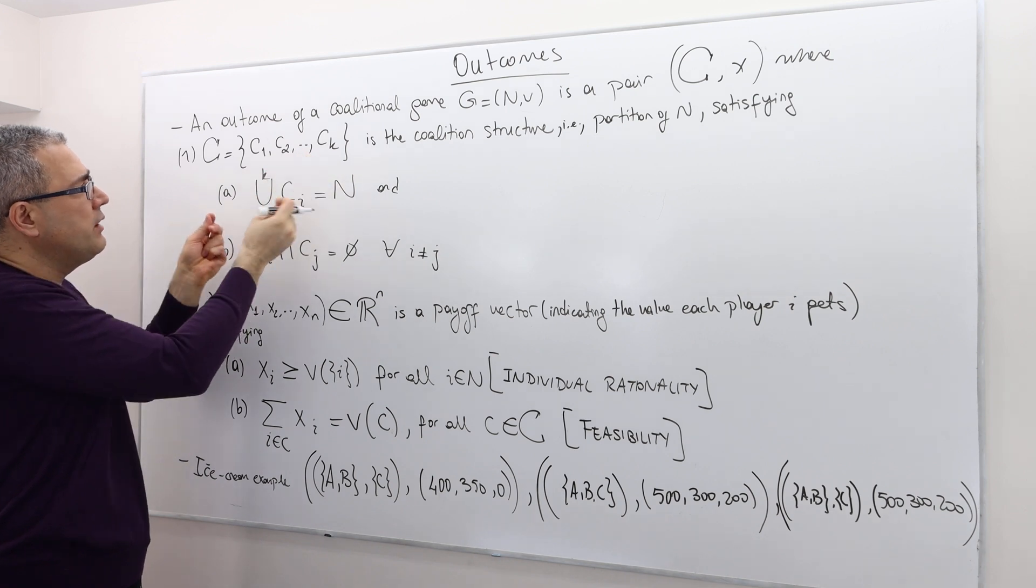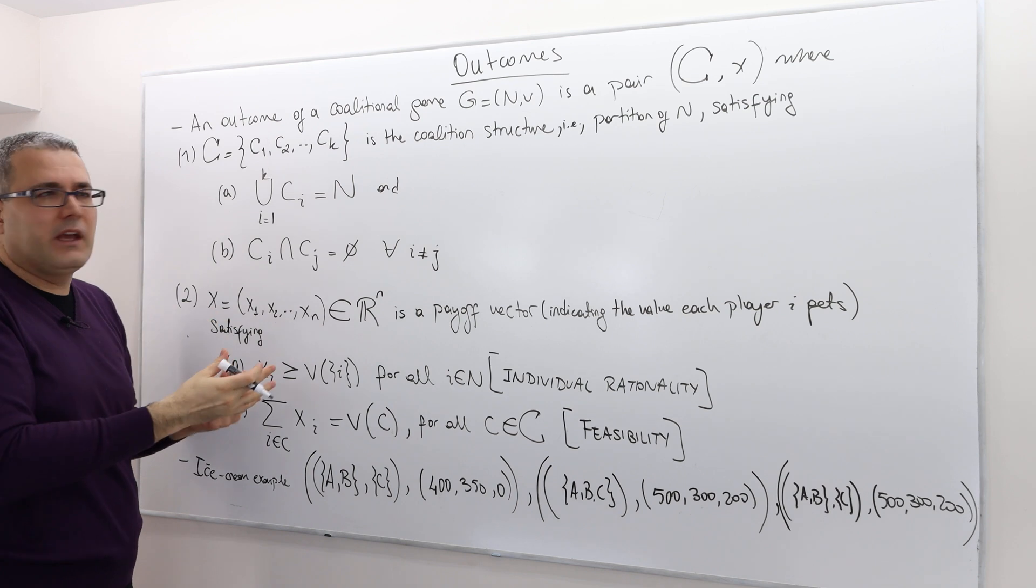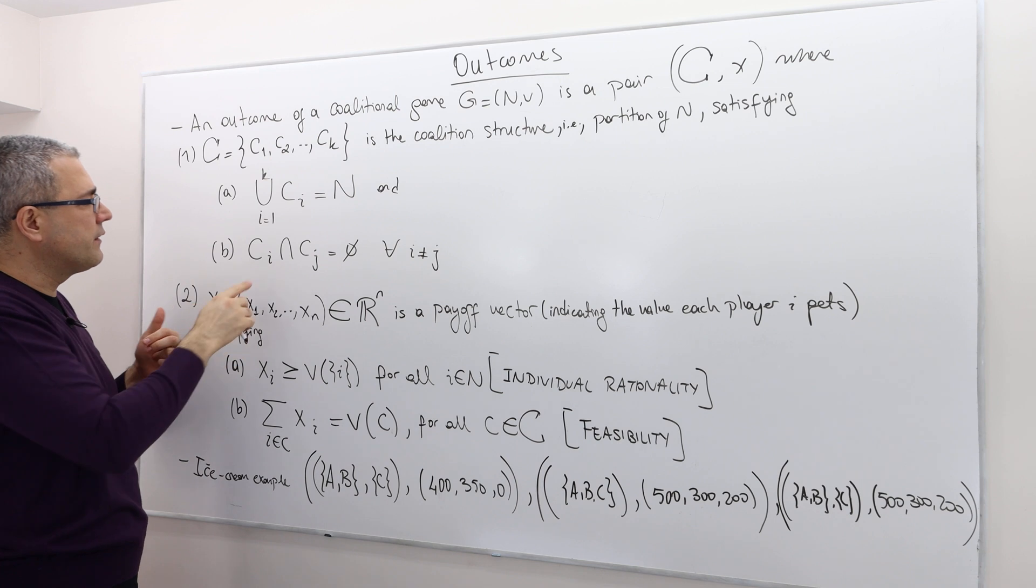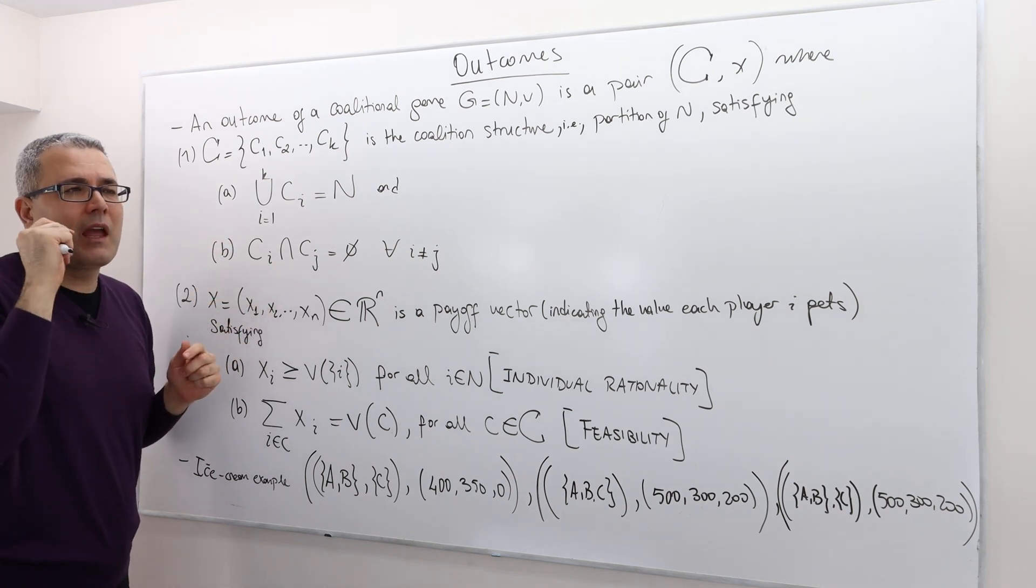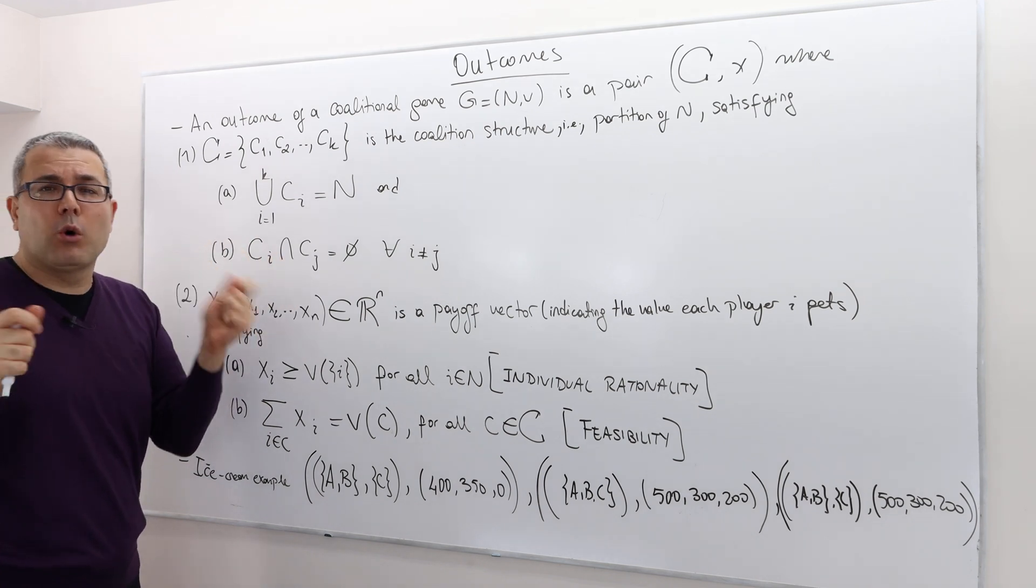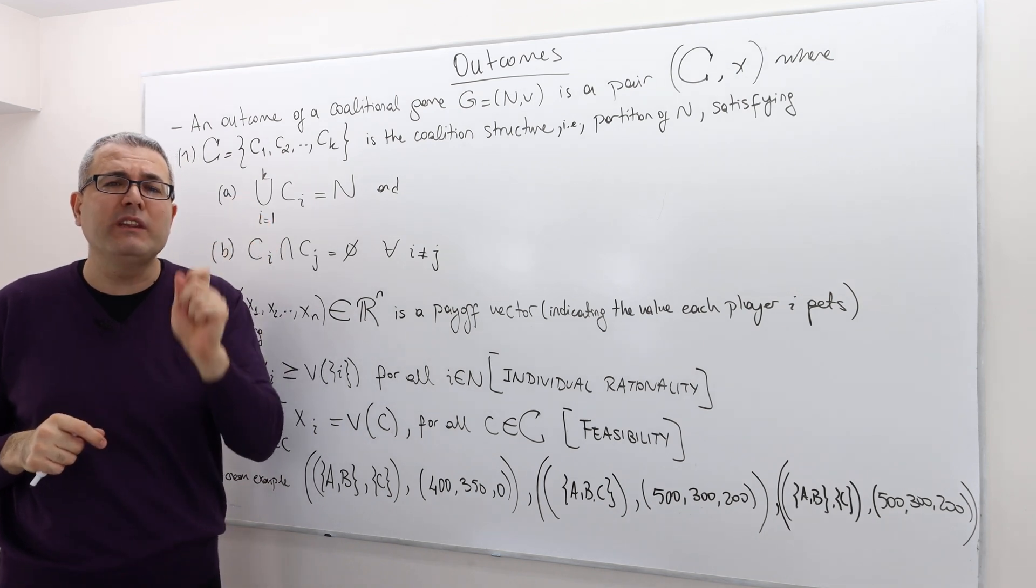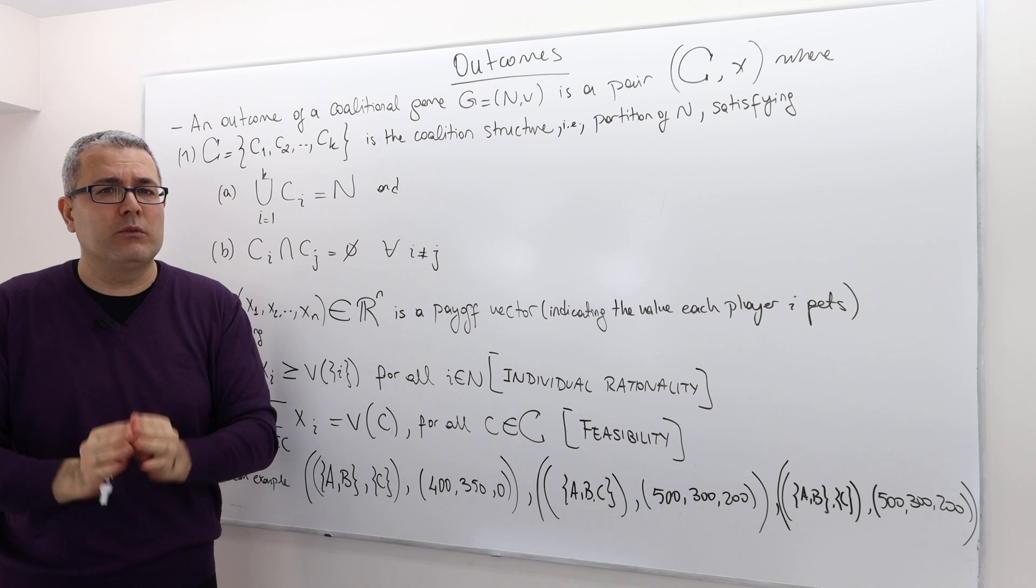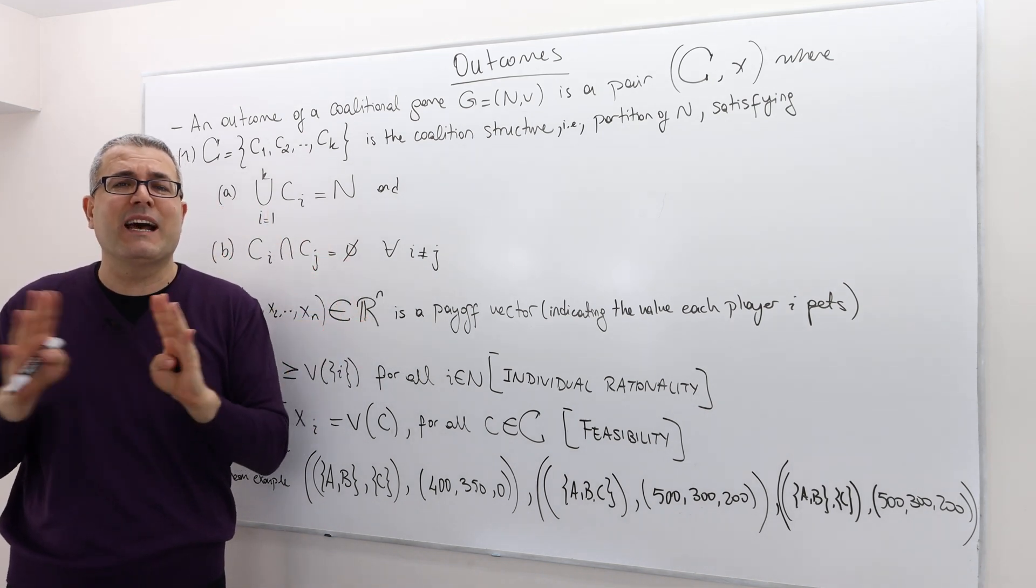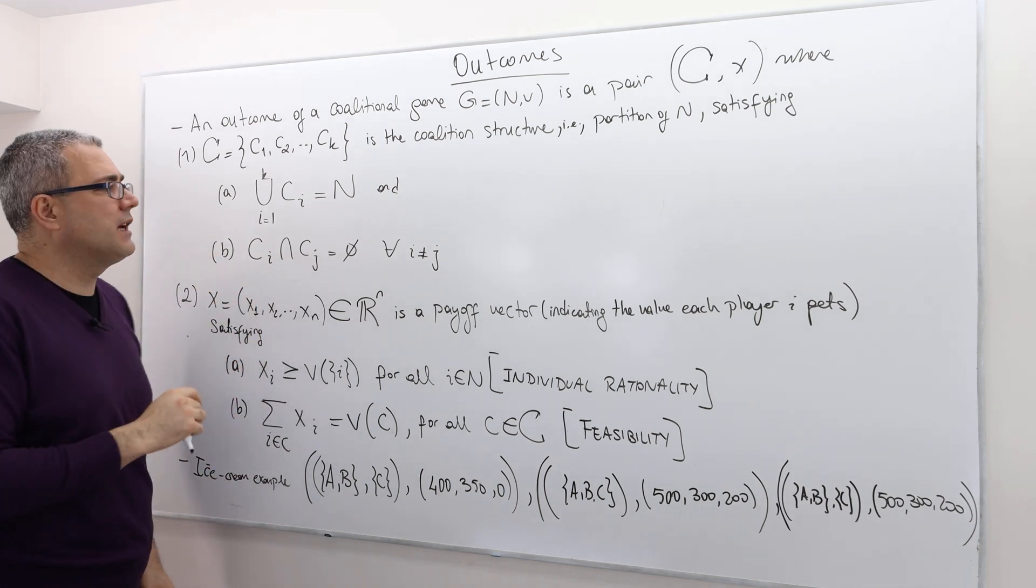So whenever you take the union of all those coalitions, nobody should be left behind. So their union must be equal to the set of players. However, a player cannot be a member of two coalitions. All right, you have to be a member of one and only one coalition. So you can be all alone, but you cannot be a member of two different coalitions. This is not allowed. So this will never be an outcome. So that's important.